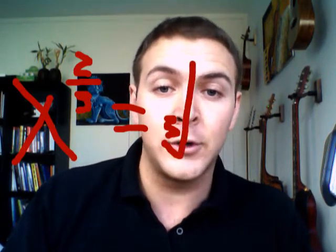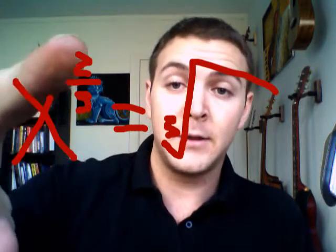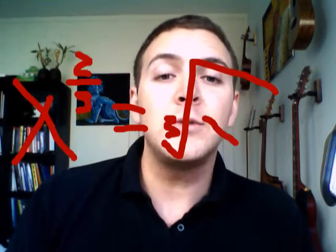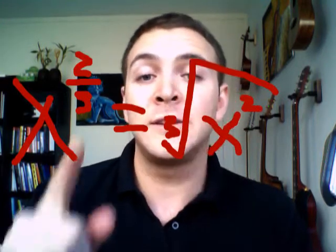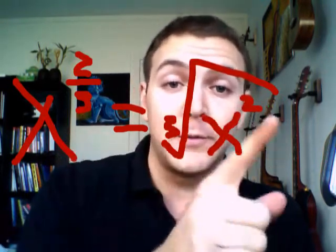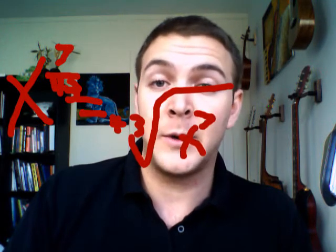When they want to get really tricky, they'll do something like this: x to the two-thirds. Remember, the denominator is always the root, so it's the third root. And then the numerator — the two — is what you take x to inside. So x to the two-thirds is the third root of x squared. For a more illustrative example, x to the seven forty-thirds is the forty-third root of x to the seventh. This is just always how it works.